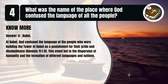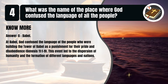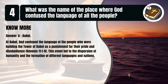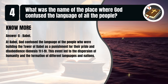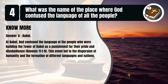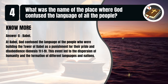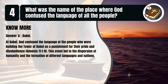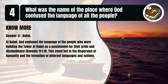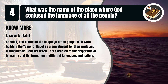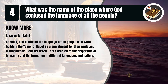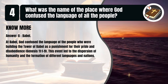That's A. Babel. At Babel, God confused the language of the people who were building the tower of Babel as a punishment for their pride and disobedience. Genesis, chapter 11, verses 1 to 9. This event led to the dispersion of humanity and the formation of different languages and nations.